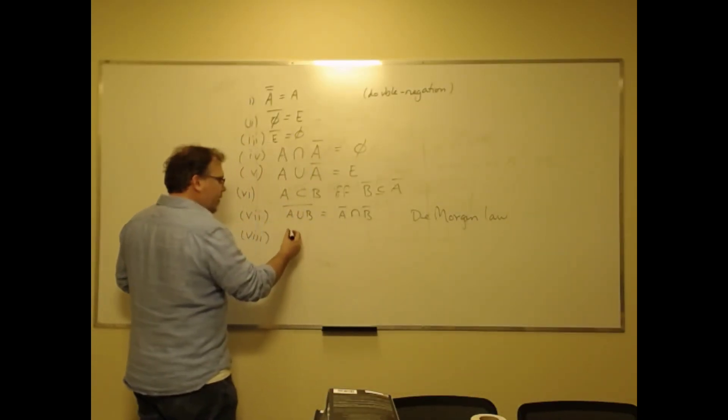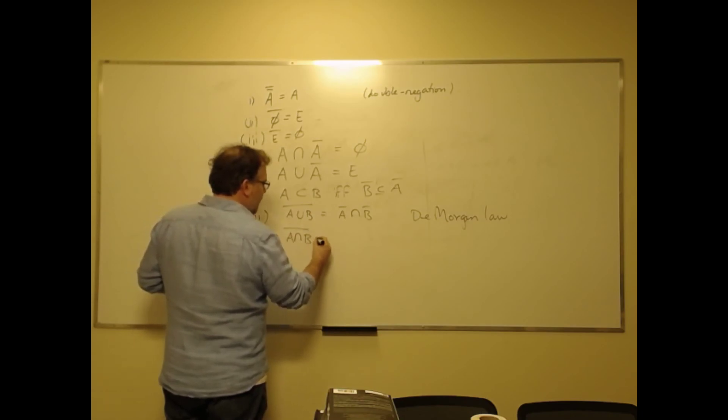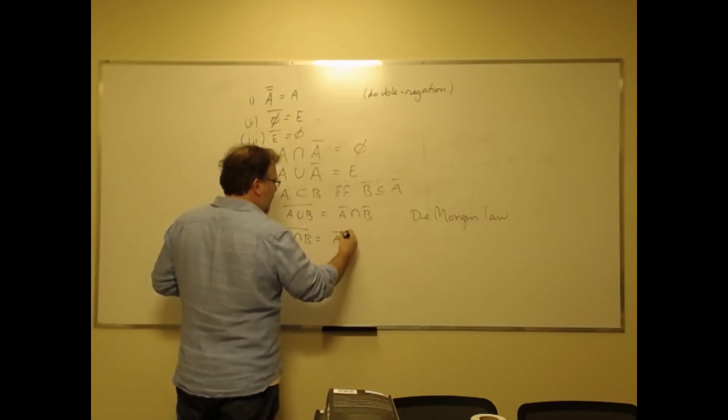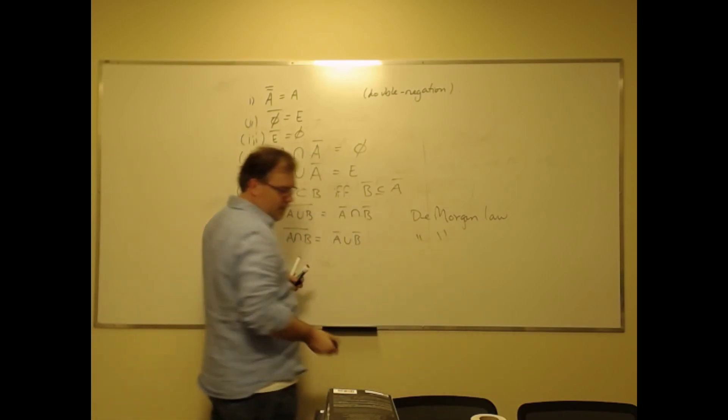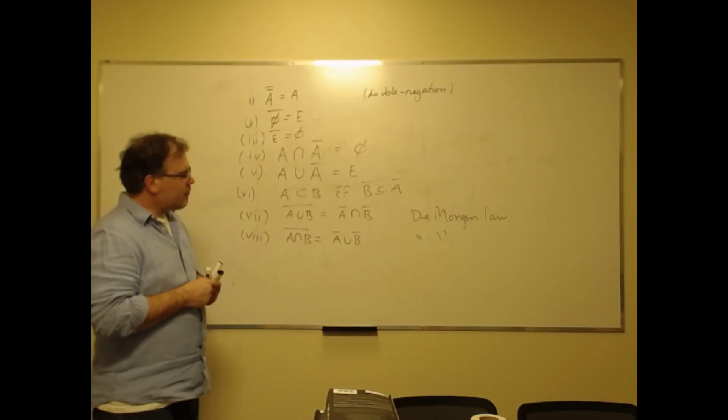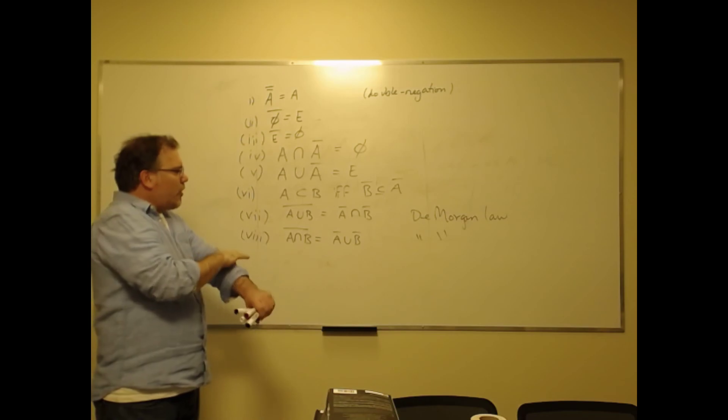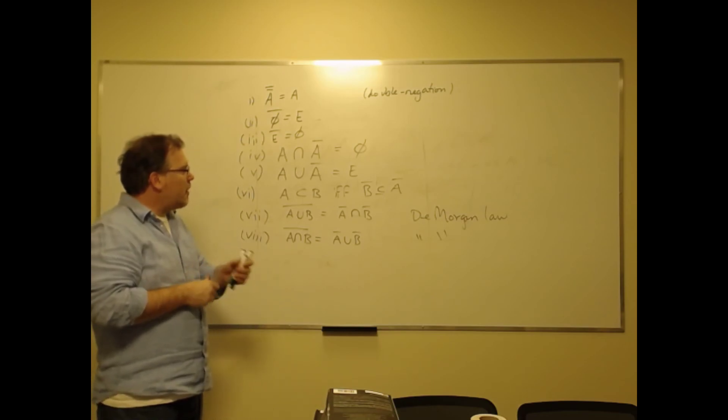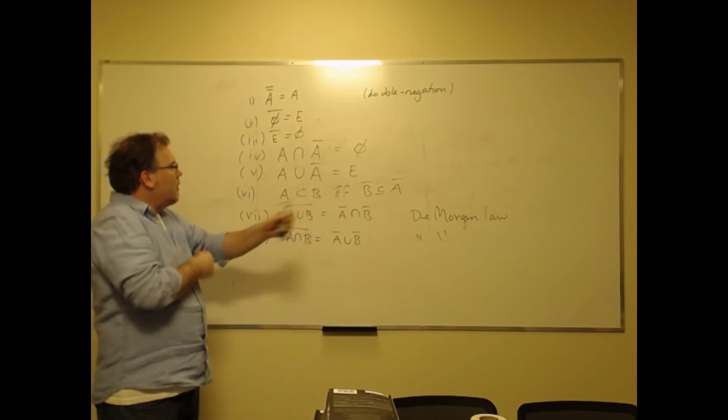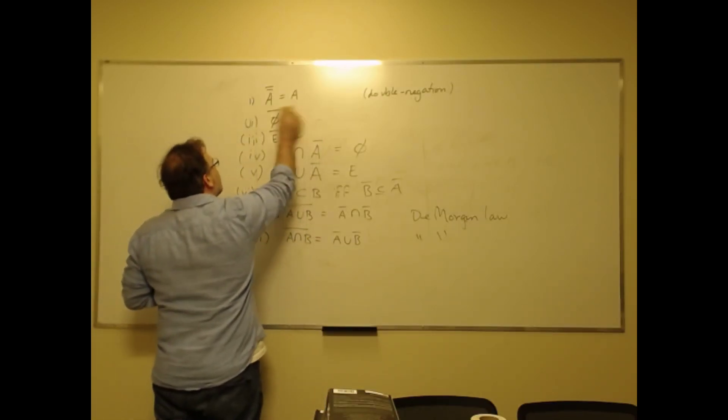And similarly, we have the complement of A intersection B equals complement of A union complement of B. And that's also a De Morgan law. So again, those are not super hard to prove. They're going to make for good exercises. I'm not going to give much more details than that—I think that should be enough. But if not, don't hesitate to get in touch with me, and I'll be happy to go through a couple exercises with you as well.